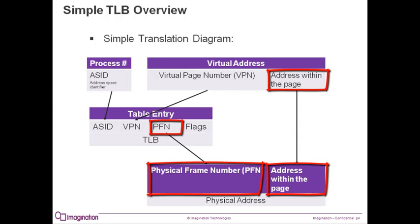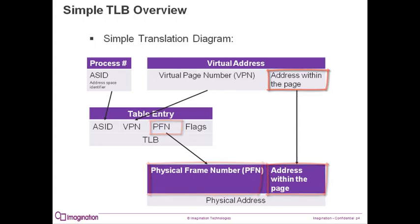If the TLB lookup fails, the CPU will signal an exception. The exception handler is then responsible for looking up the virtual address translation in the process's page table and replacing an entry in the TLB with it. Then the CPU will again execute the instruction that caused the exception and search the TLB once more for the correct entry.